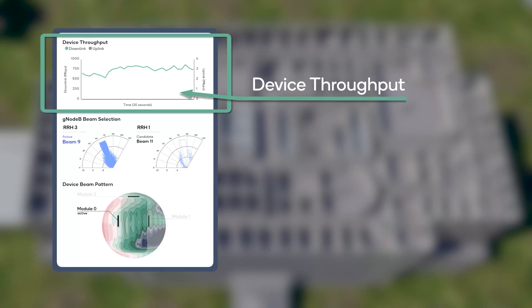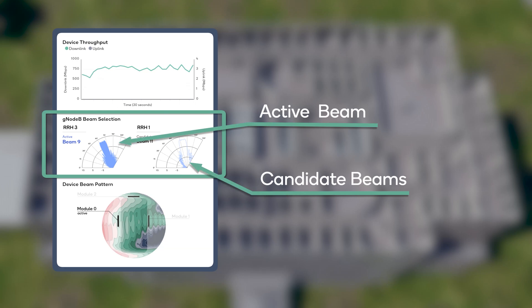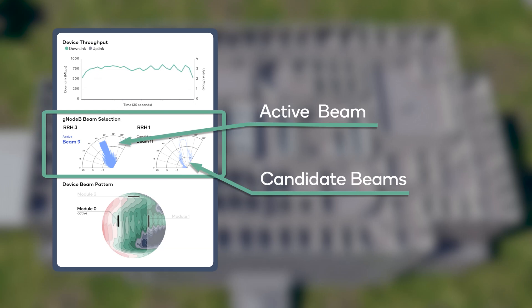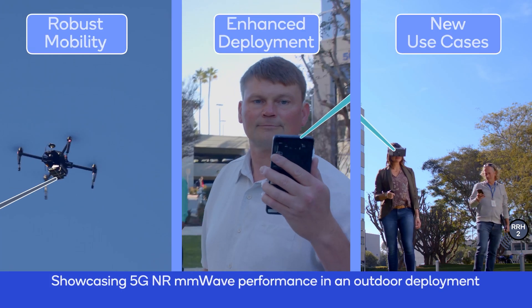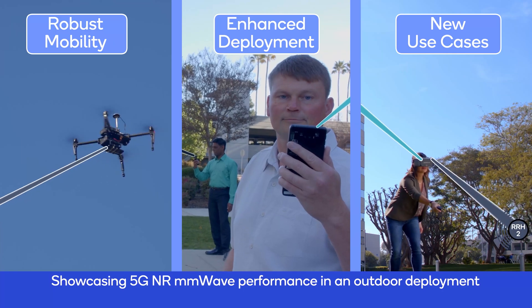Throughout this demo you'll be seeing this GUI that portrays the KPIs for the demos. We have the downlink throughput, the active beams for up to two remote radio heads on the gNodeB as well as the active module and the associated beam pattern for the device. We'll be covering robust mobility, enhanced deployment, as well as new use cases on our network.